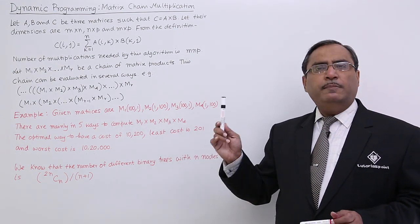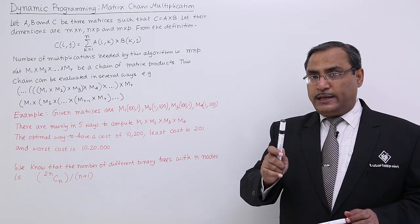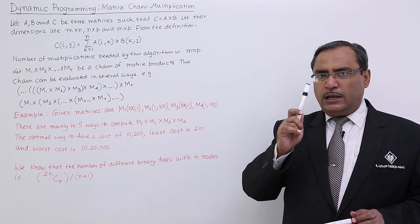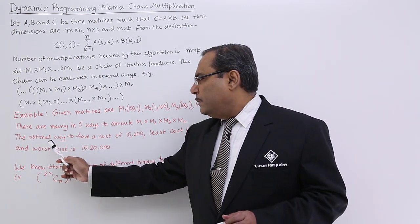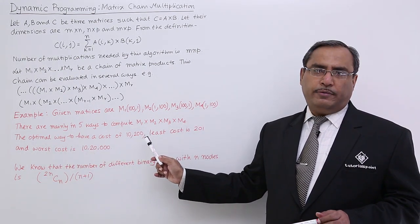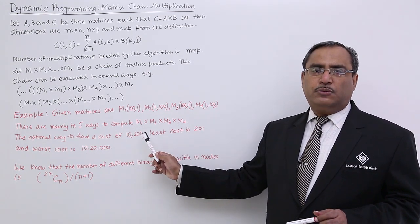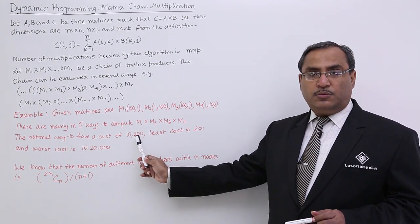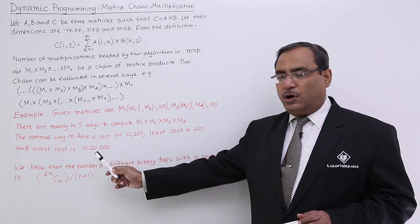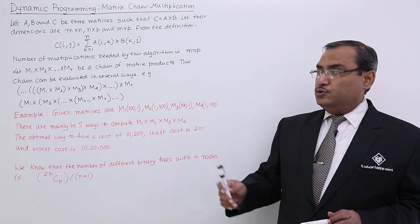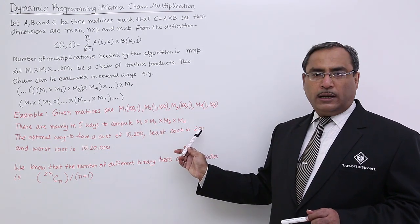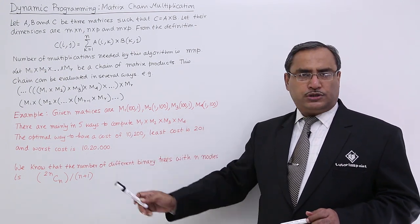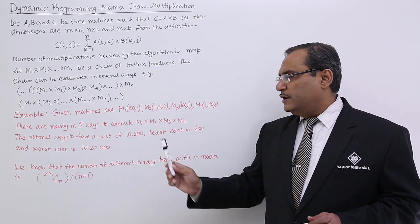We can do this multiplication in multiple different ways — mainly 5 different ways — yielding 5 different complexity values. The optimal way has a cost of 10,200 multiplications. The least cost is 201 multiplications. See the variation: it is 10,200 versus 201, and the worst case cost is 10,20,000. So depending upon the sequence, the minimum cost is 201 and the maximum cost is 10,20,000.